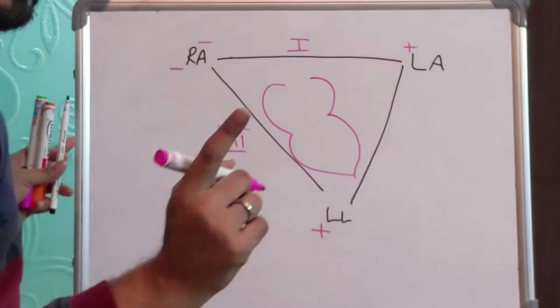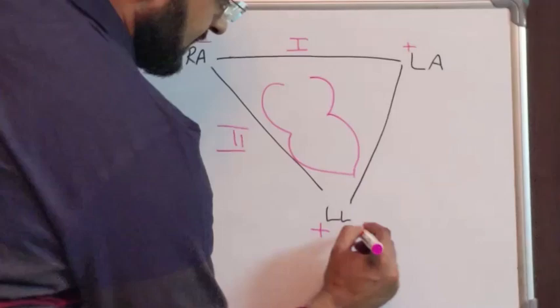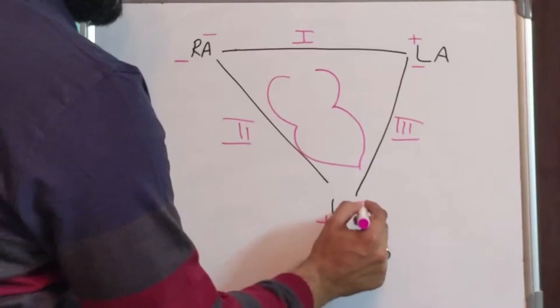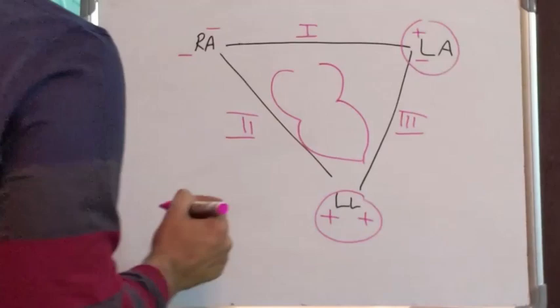And this is where I had made a mistake in the last video. The lead with the positive electrode at the left leg and the negative electrode at the left arm is lead 3. So the left leg has got positive electrodes of 2 and 3. The left arm has got one positive and one negative whereas the right arm has got both negative electrodes.